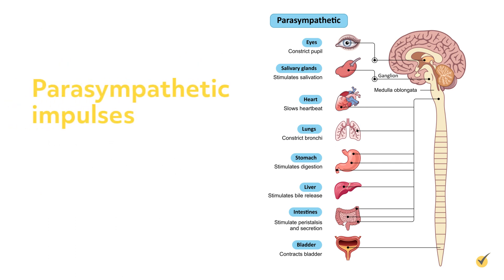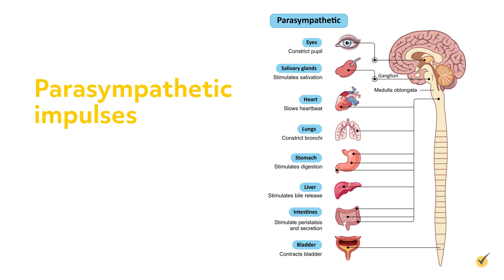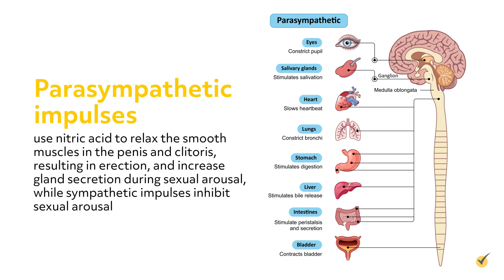Additionally, parasympathetic impulses use nitric oxide to relax the smooth muscles in the penis and clitoris, resulting in erection and increased gland secretion during sexual arousal, while sympathetic impulses inhibit sexual arousal.